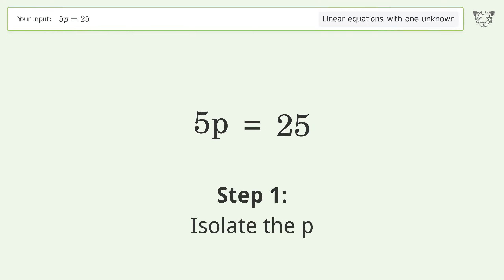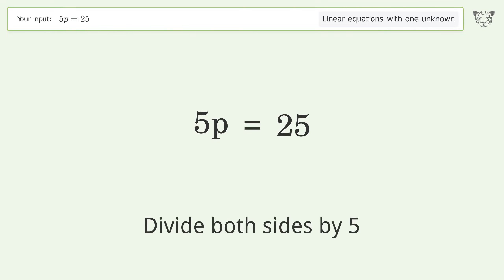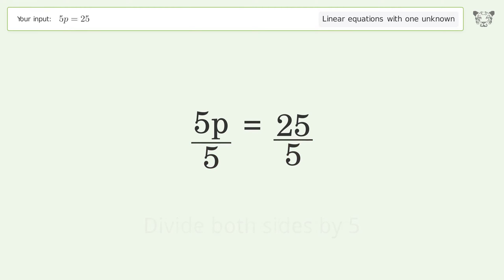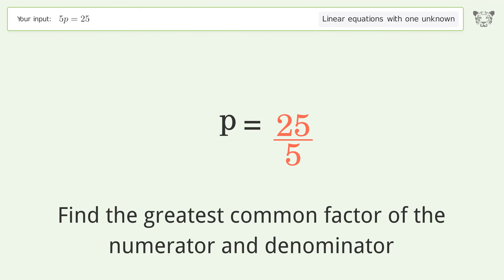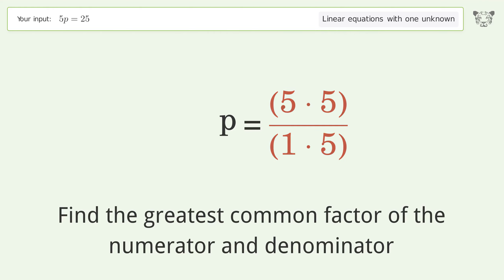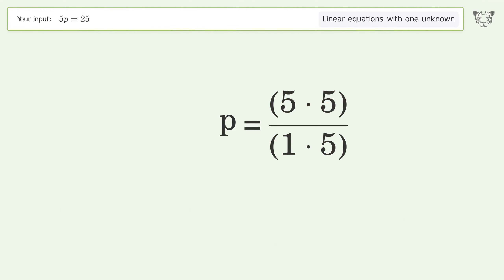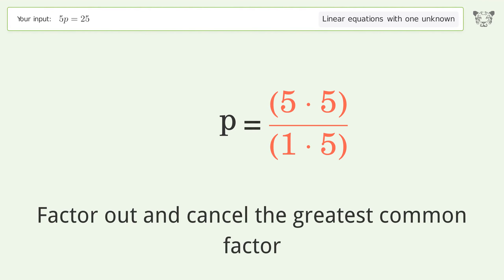Isolate the p: divide both sides by 5, then simplify the fraction. Find the greatest common factor of the numerator and denominator, then factor out and cancel the greatest common factor.